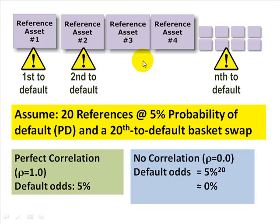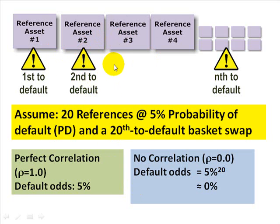You can see there is real ambiguity and complexity in terms of the impact of default correlation, depending on where we set the attachment point. I hope this was helpful. This is David Harper, the Bionic Turtle — thanks for your time.